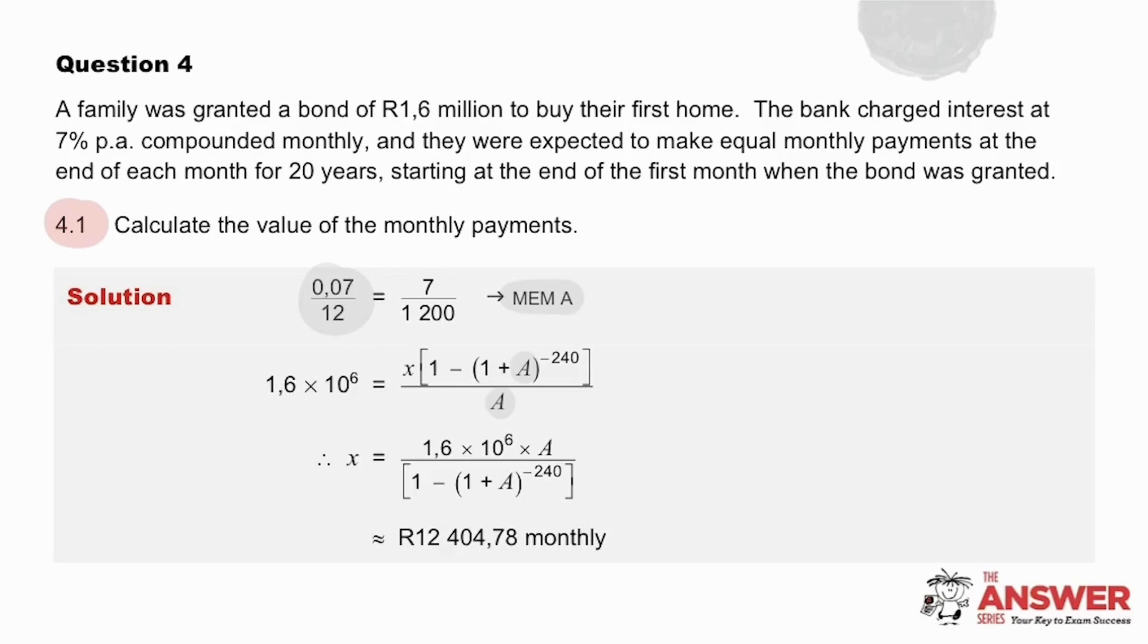Then for 4.1 they are asking us to calculate the monthly payments. In other words it is X we are looking to solve for. Remember the tip of writing a million as times 10 to the power 6 and then payments on a monthly basis for 20 years means there will be 240 payments and our answer for X, the monthly payments, is 12,404 rand and 78 cents.